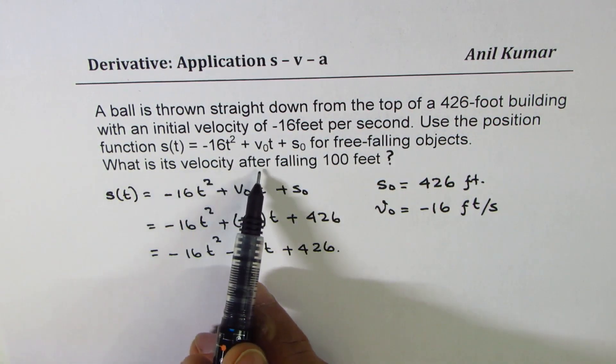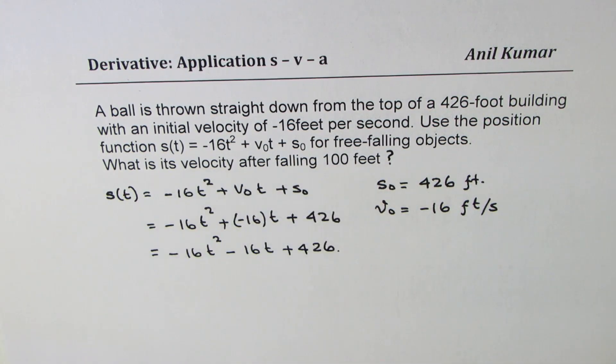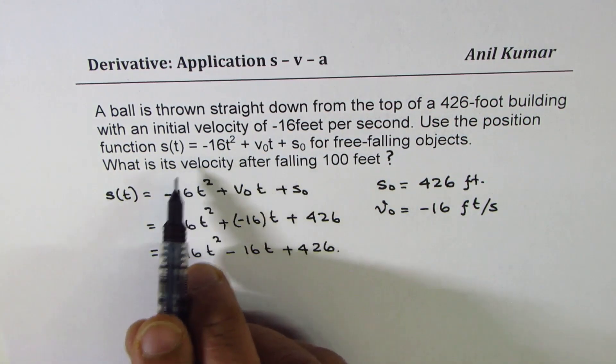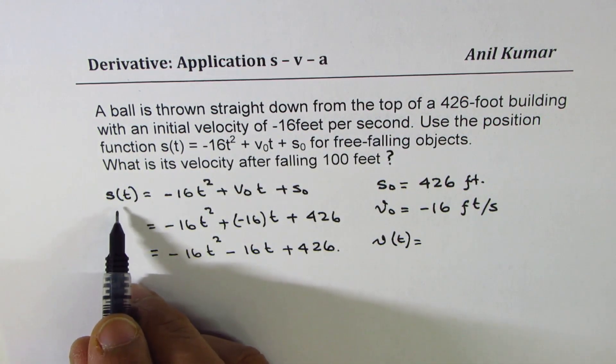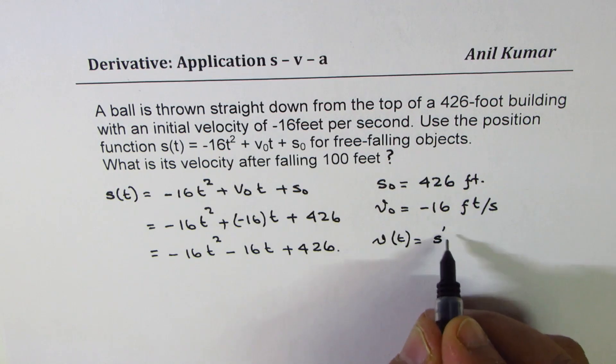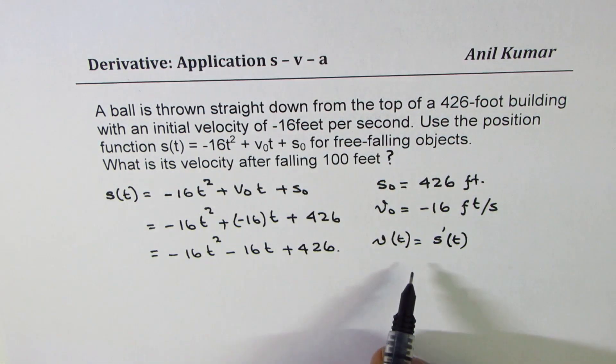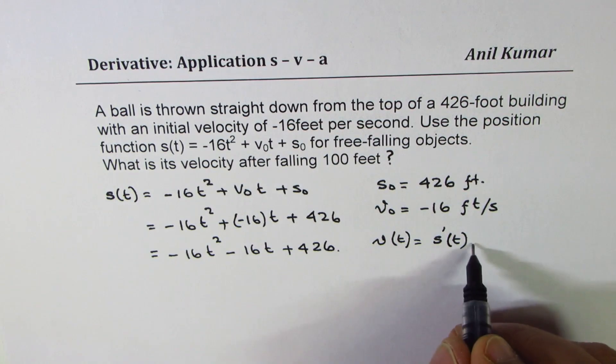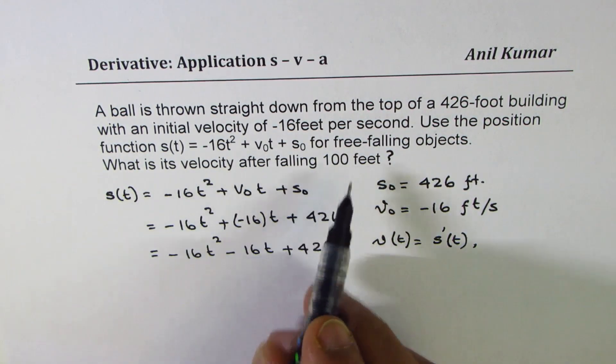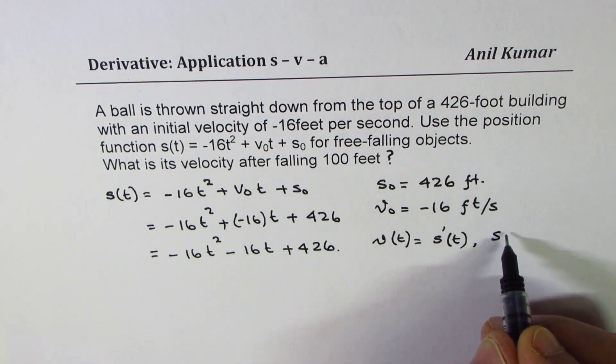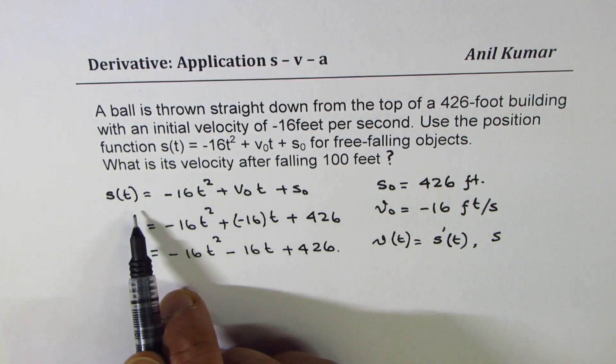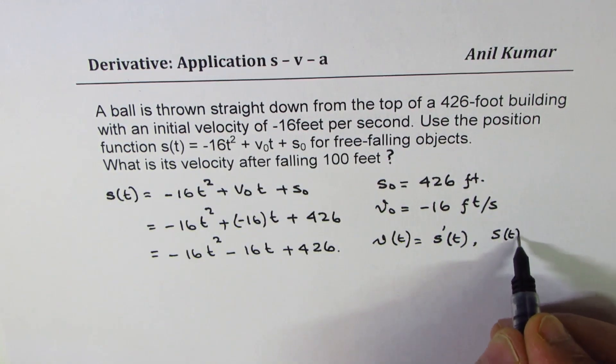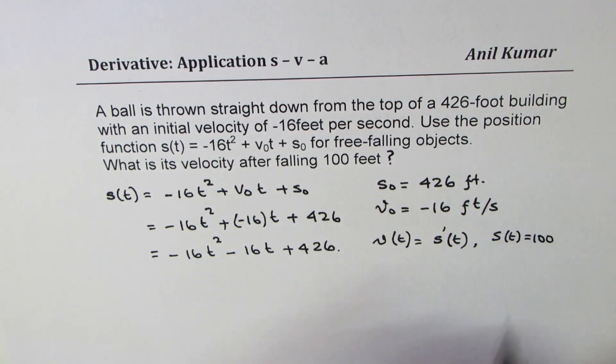What is the velocity after falling 100 feet? That's what we need. That means velocity is rate of change. So we know velocity is rate of change of displacement or height in this particular case. Now, we need to find what is this velocity when it has fallen 100 feet. That means we have to find what is t when s(t) is 100. So I hope the question is absolutely clear.